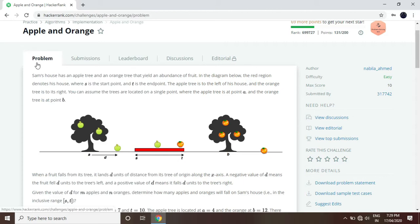Here is the problem. Sam's house has an apple tree and an orange tree that yield an abundance of fruit. In the diagram below, the red region denotes his house where S is the starting point and T is the endpoint.